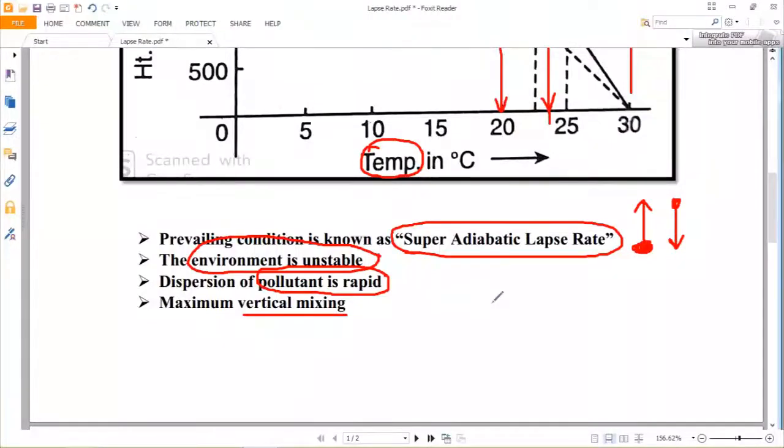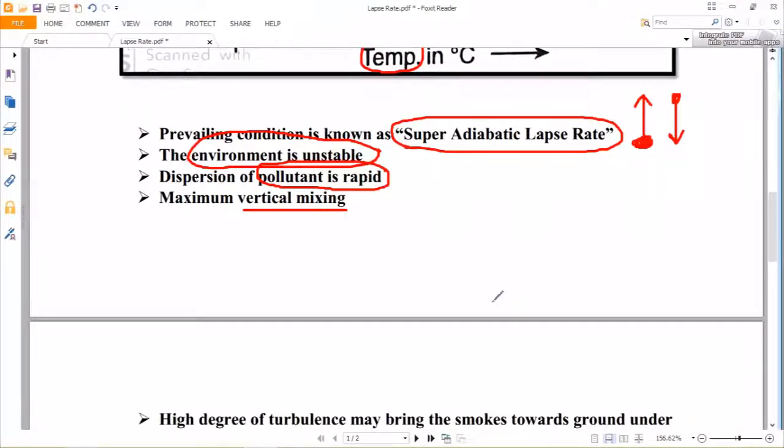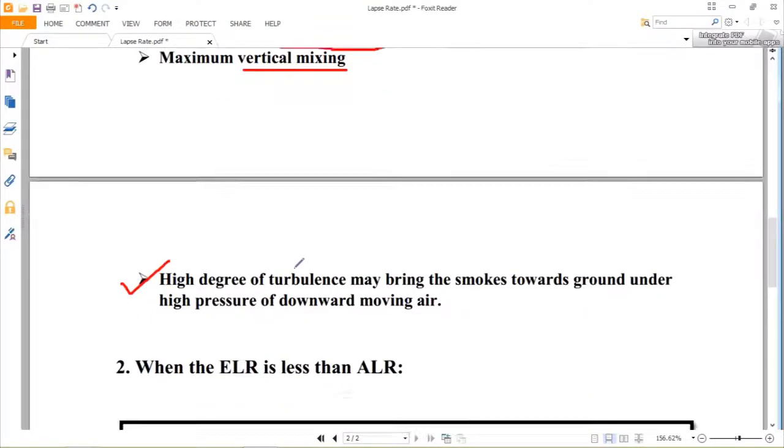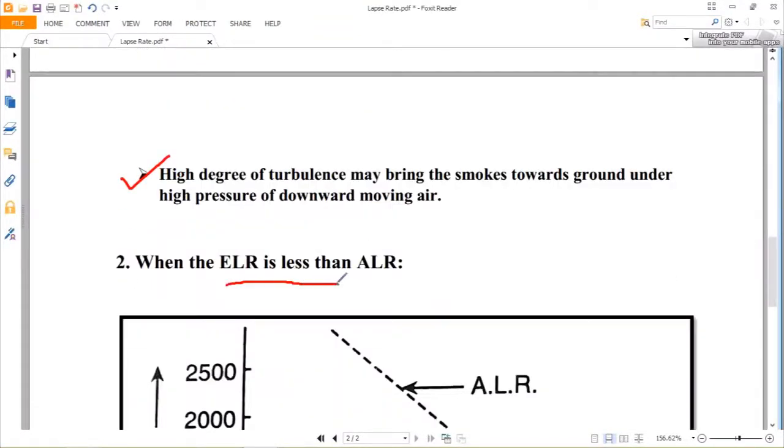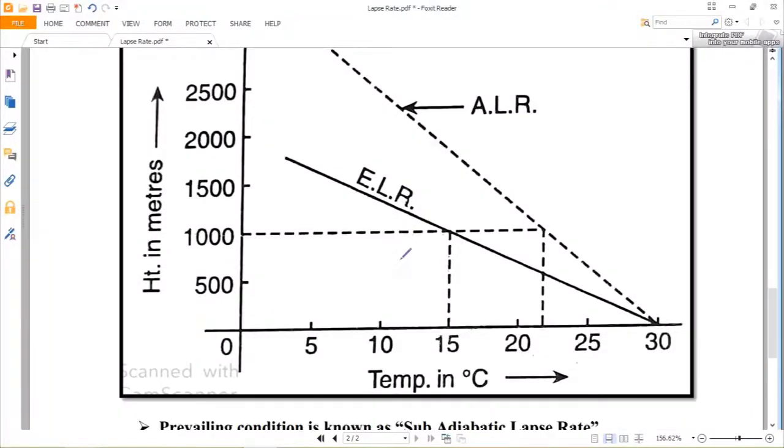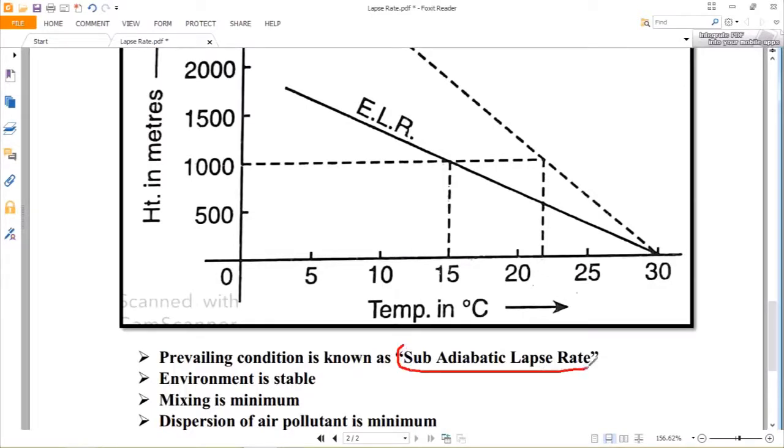The second case is when the ELR is less than the ALR. In that case, the environment is known as stable and the prevailing environmental lapse rate is called the sub adiabatic lapse rate, as it is less than the adiabatic lapse rate. In this environmental situation, we can achieve minimum mixing of the air pollutant. Due to the less turbulence, dispersion of air pollutant is minimum.